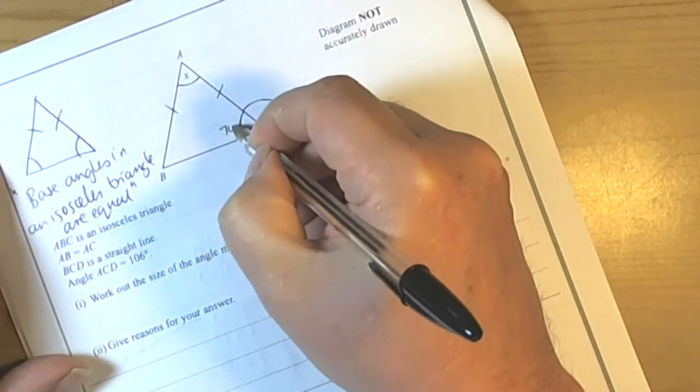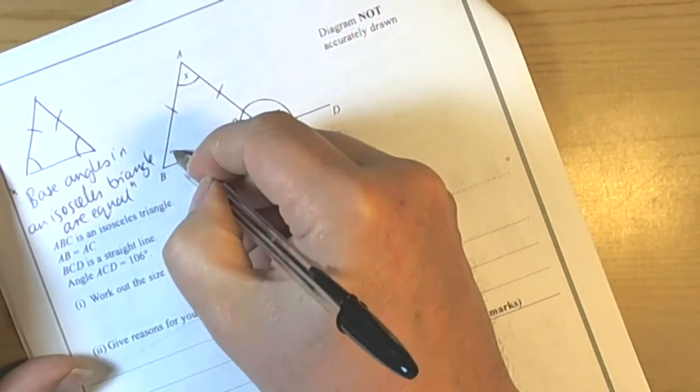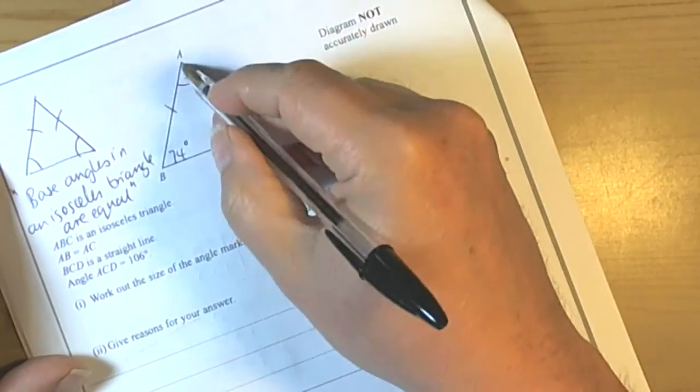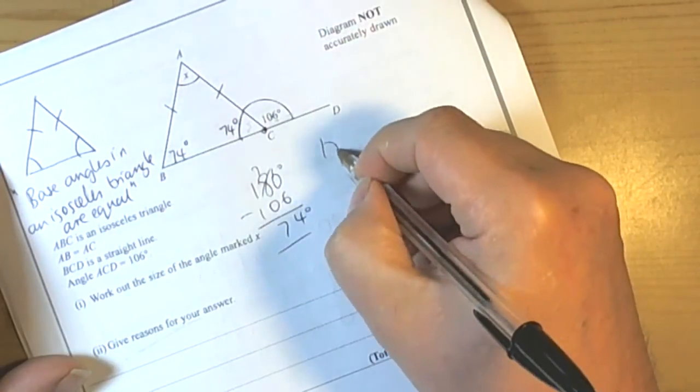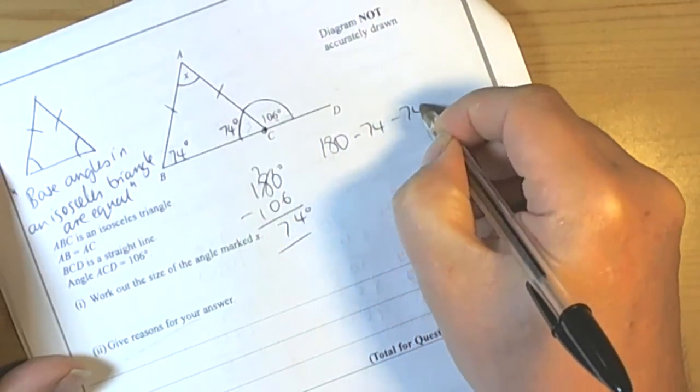So we now know that that is 74 degrees, and because we said that base angles in an isosceles triangle are equal, we also know that that is 74 degrees. So we've got angles in a triangle add up to 180, so 180 take away 74 take away 74.